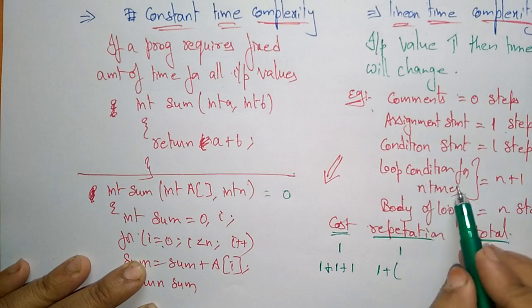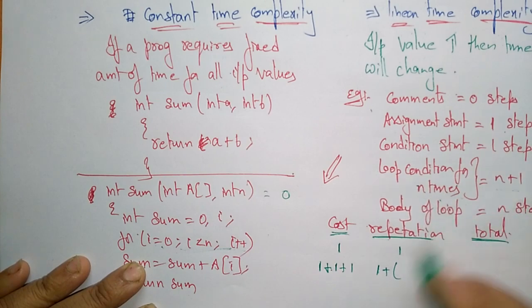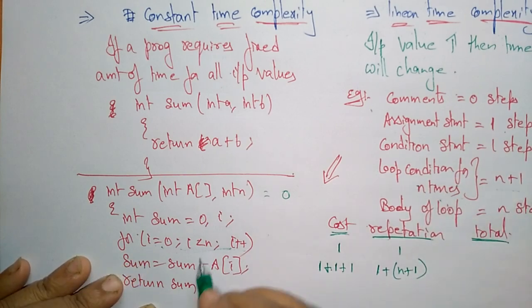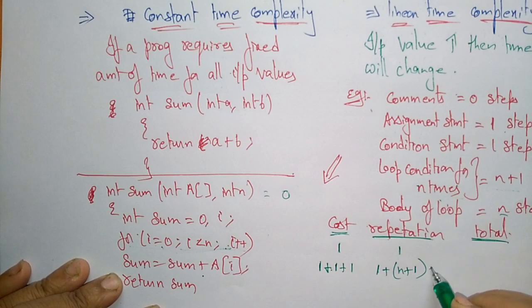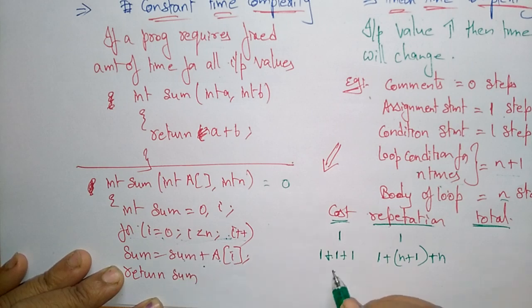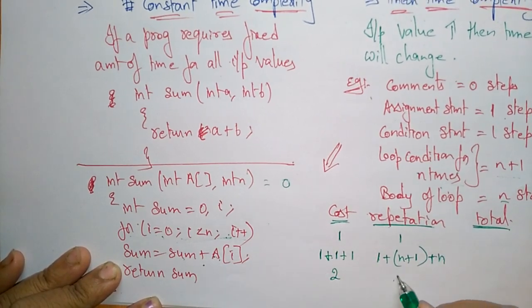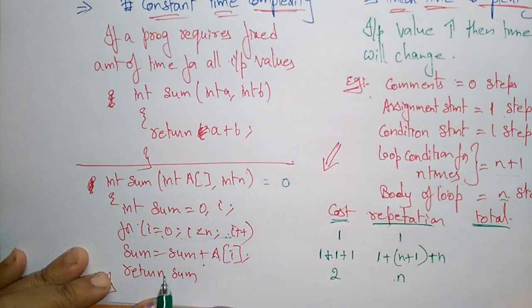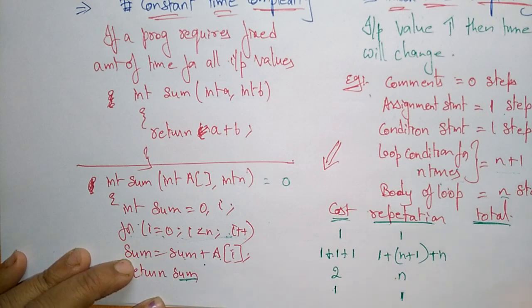The loop condition runs for n plus 1 repetitions. When you enter the body of the loop, that is n steps. Inside the body, sum = sum + a[i] is an assignment operation, so its cost is 1 and repetition is n. For return sum, this is like a variable declaration returning the answer, so cost is 1 and repetition is 1.